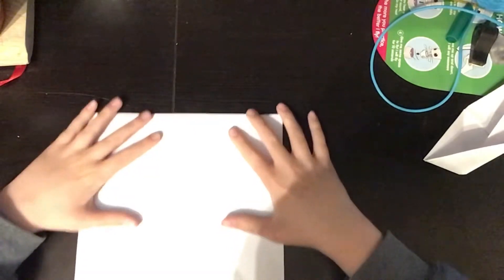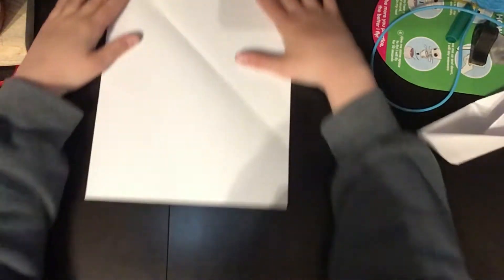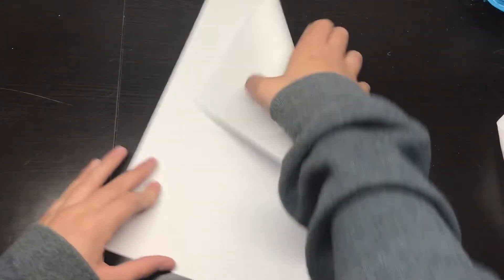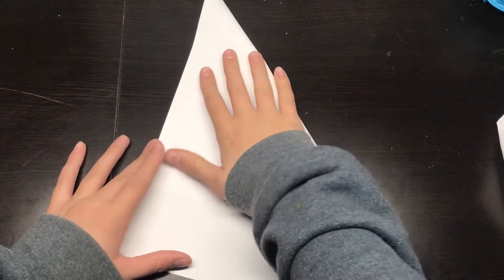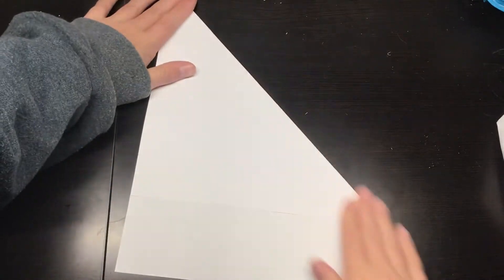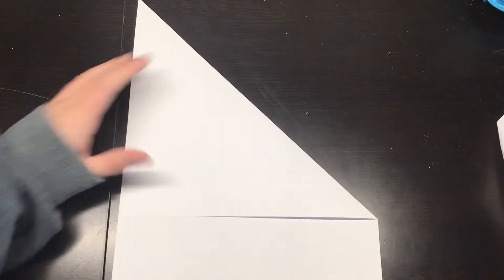For this, you're going to want a square piece of paper. You need a square piece of paper. So you fold this corner down like this, and then you trim that for a square piece of paper.